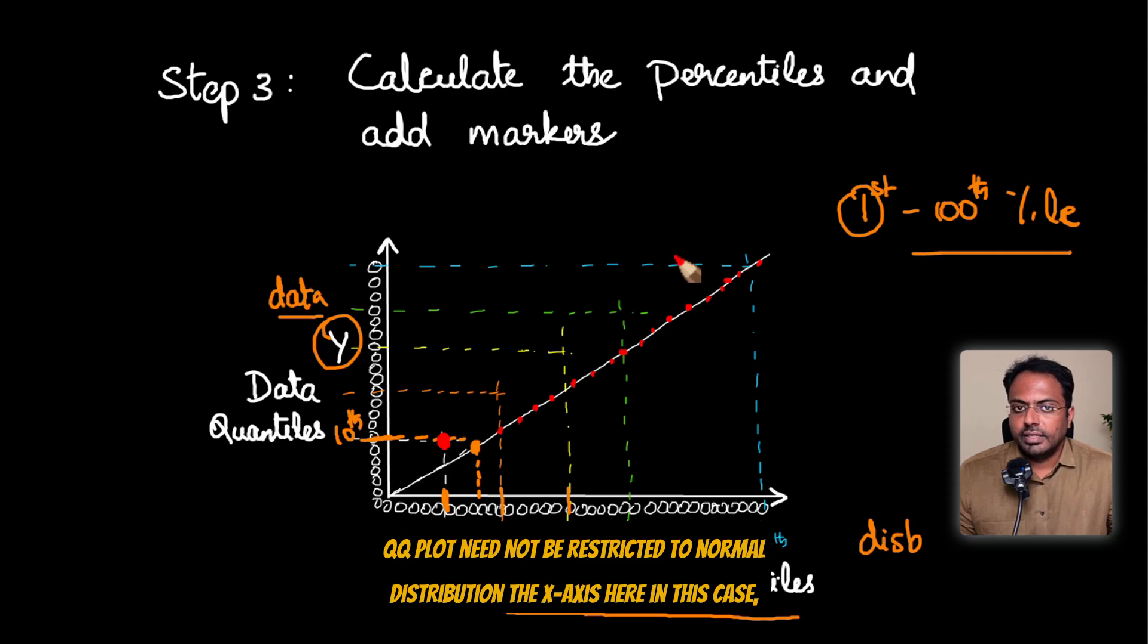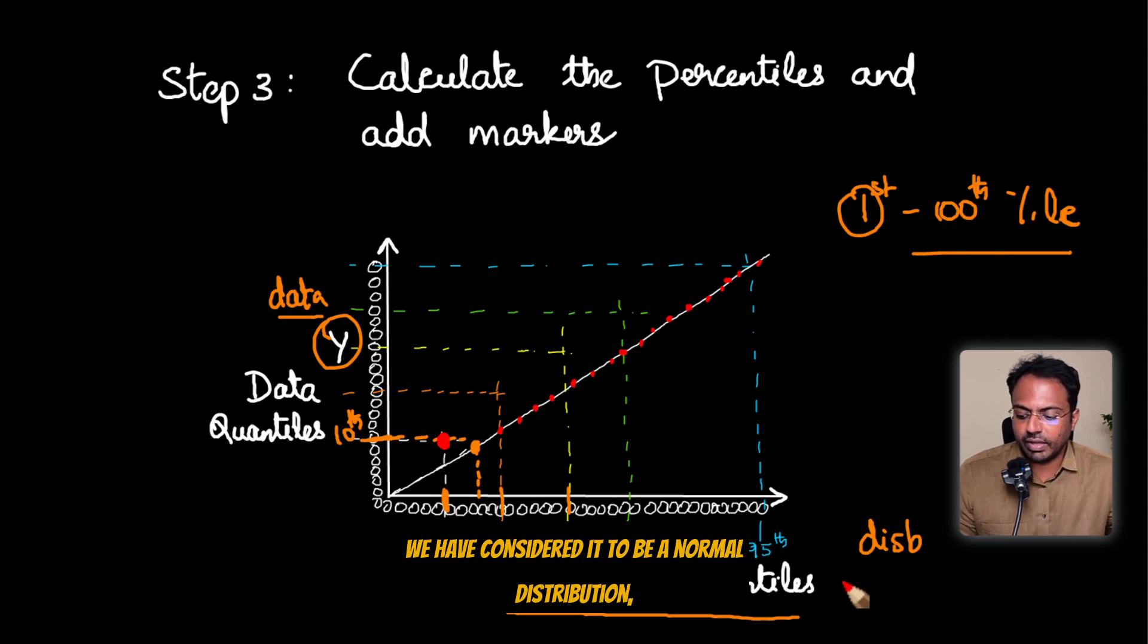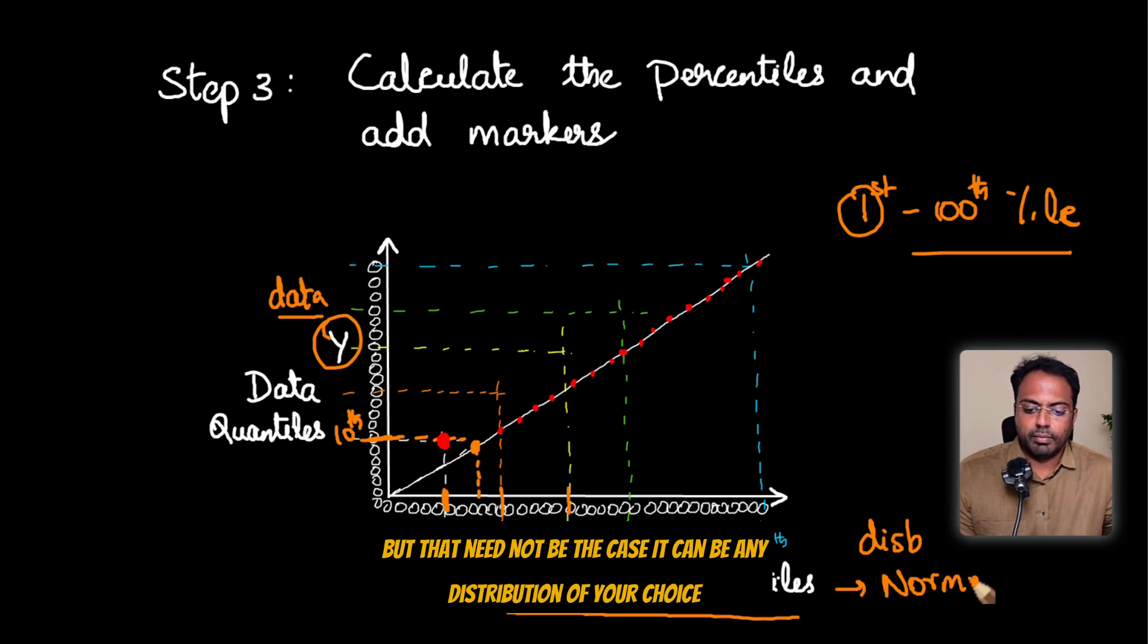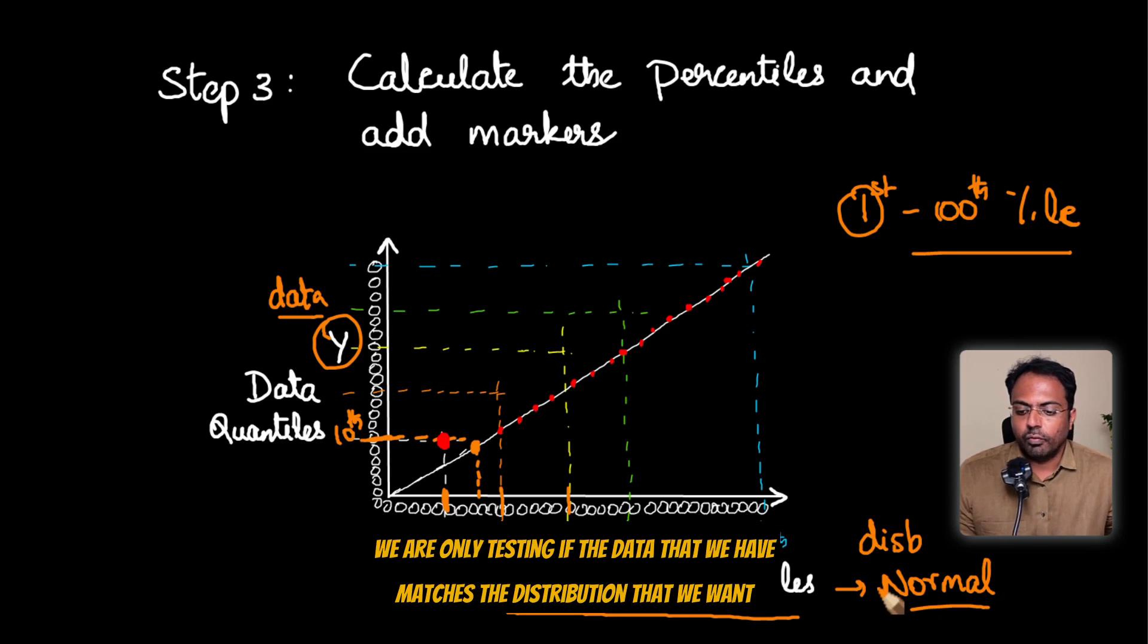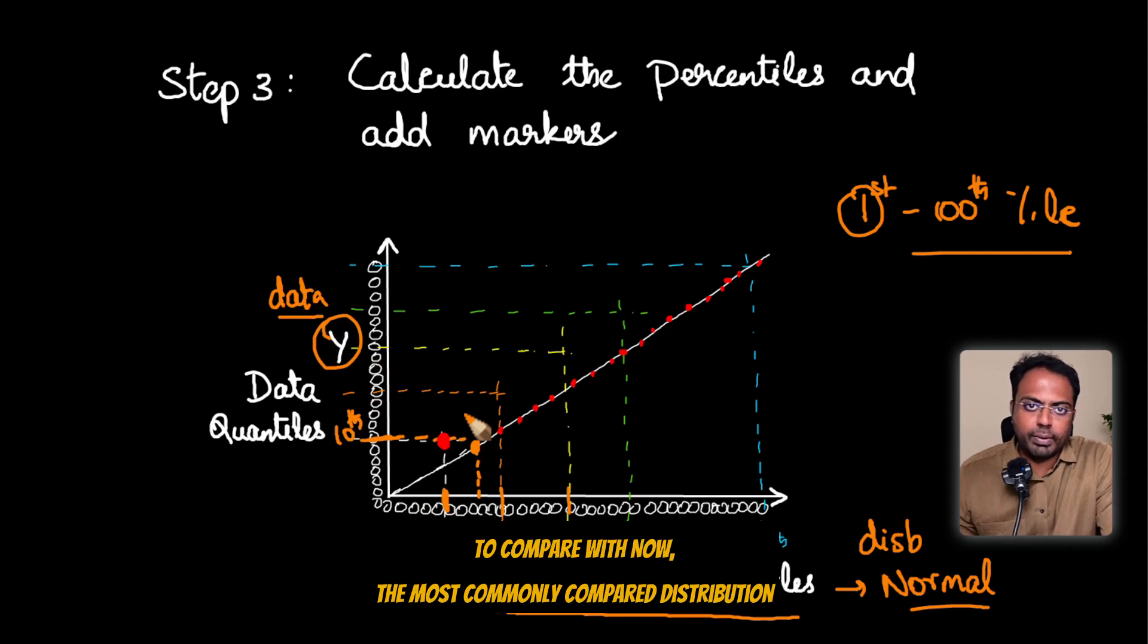Now, I said QQ plot need not be restricted to normal distribution. The x axis here, in this case, we have considered it to be a normal distribution. But that need not be the case. It can be any distribution of your choice. We are only testing if the data that we have matches the distribution that we want to compare with.